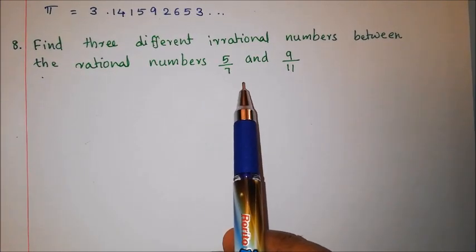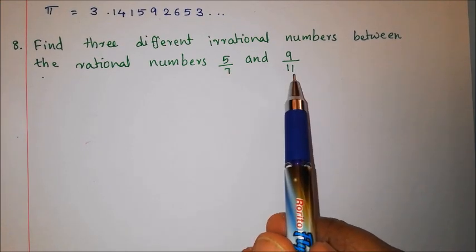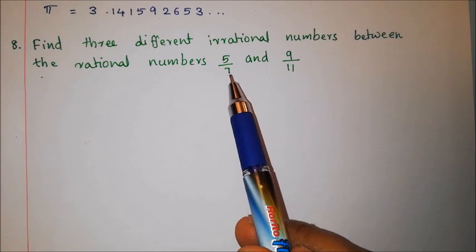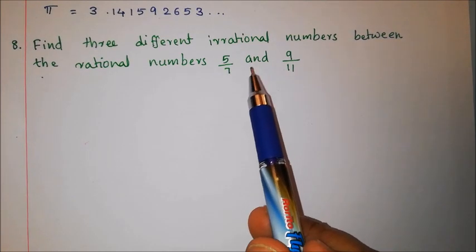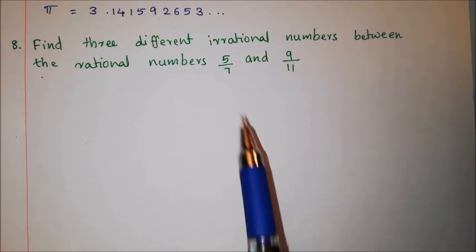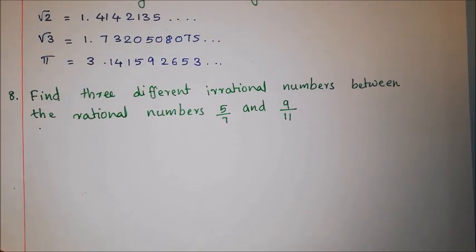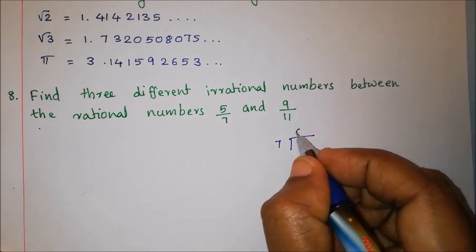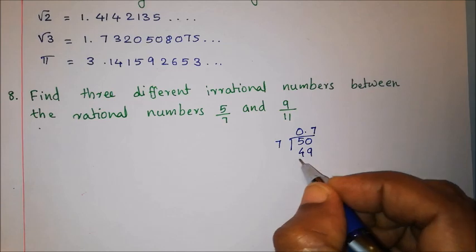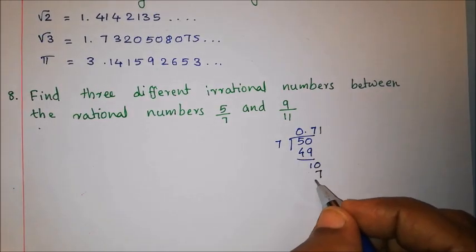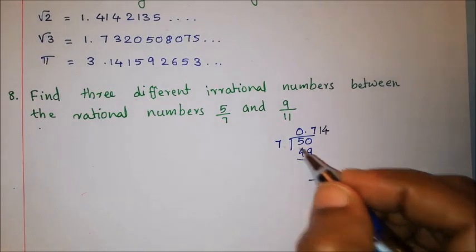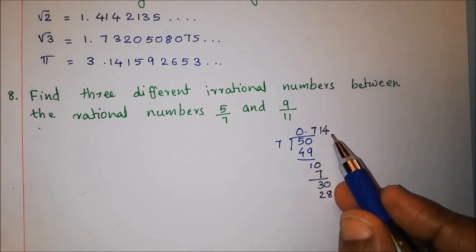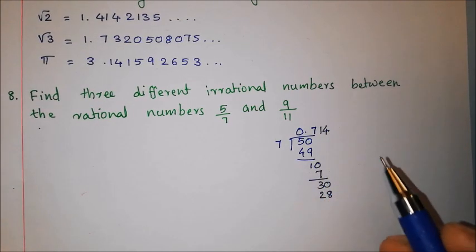Question 8: Find 3 different irrational numbers between the rational numbers 5 by 7 and 9 by 11. We first find the decimal expansions of both rational numbers. Since rational numbers have patterns in their decimal expansions, whether terminating or recurring, we look at 5 by 7 and 9 by 11.